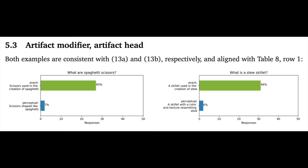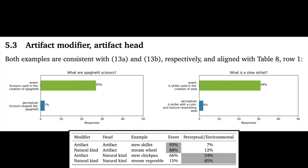Now we move to the core cases, which will come in pairs because of our design. So we start with artifact modifier, artifact head. This was a super clear case for Levine et al., and it's super clear for us too. The event readings totally dominate for both spaghetti scissors and stew skillet.